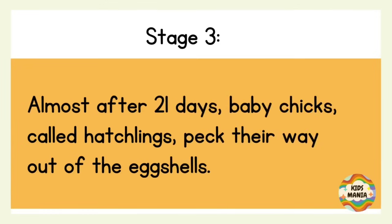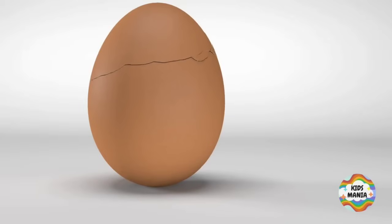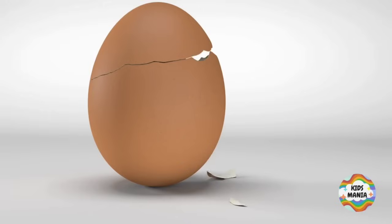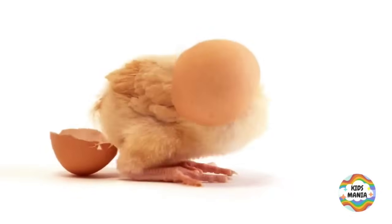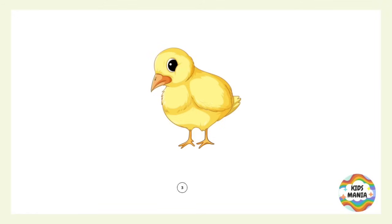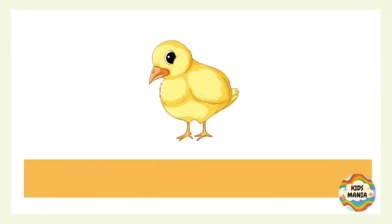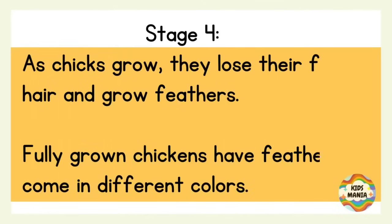Stage three: almost after 21 days, baby chicks called hatchlings peck their way out of the eggs to come out. Here you can see a hatchling coming out of the egg shell. Isn't that cute? This is the chick.